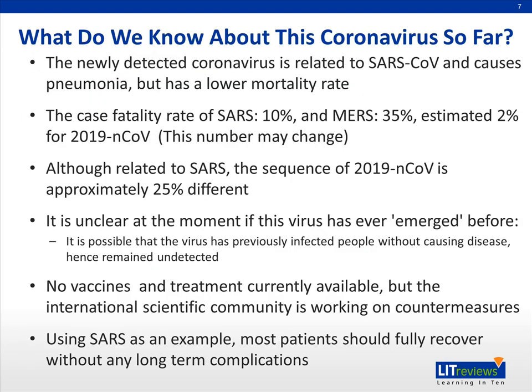Although it's only about two months into the outbreak, we actually know quite a lot about this new virus. It's related to SARS, but the fatality rate is lower. The case fatality rate for SARS is 10%, MERS is 35%, and for this new coronavirus it is estimated at around 2%, though more accurate numbers will come with more confirmed cases. The virus is not the same as SARS — there is around 20 to 25% genetic difference. We don't know whether this virus first emerged in humans recently or has caused mild disease or small clusters in the past. There is currently no vaccine, and the international scientific community is working around the clock to develop one. Using SARS as a reference, most patients will eventually fully recover without any long-term complications.